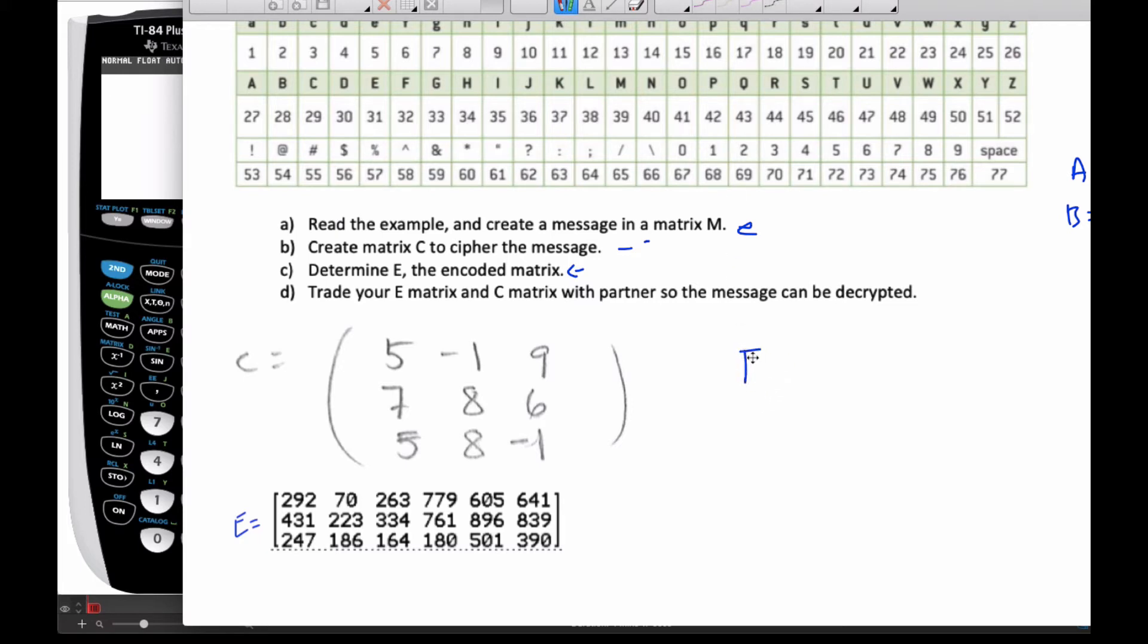In order to get E, we had to multiply C times M. So if I want to undo the C basically, I have to multiply by the inverse of C. Multiply C inverse times E, and I have to multiply this side by it as well on the left hand side so that this is the identity matrix. So now my message matrix will be the inverse of C times E.